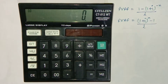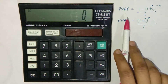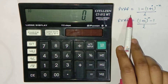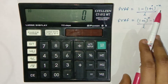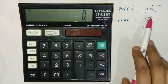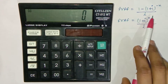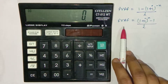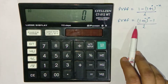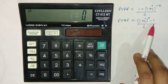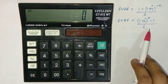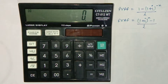The formula for the present value annuity factor is: 1 minus (1 plus i) raised to the power minus n, divided by i. And the formula for the future value annuity factor is: (1 plus i) raised to the power n, minus 1, divided by i.